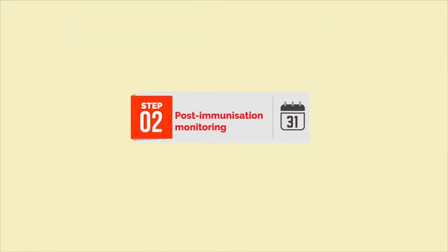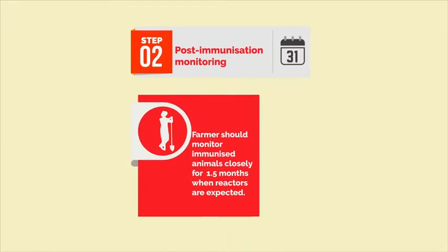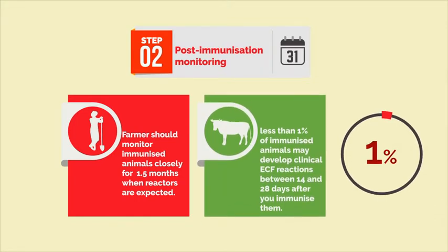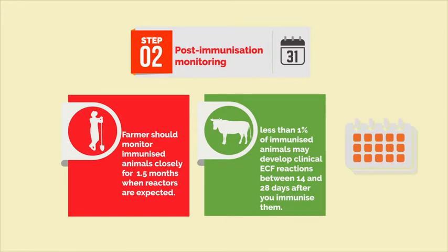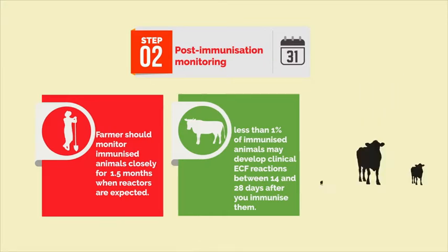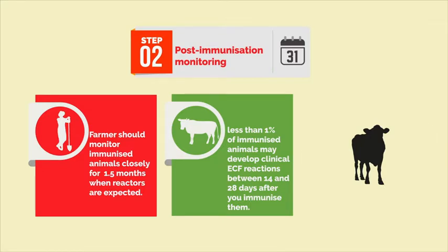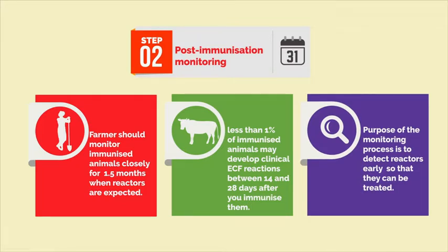Step 2: Post-immunization monitoring. The farmer should be advised to monitor immunized animals closely for one and a half months, when reactors are expected. A small proportion — 1% or less — of immunized animals may develop clinical ECF reactions between 14 and 28 days after immunization. This may be because some animals receive slightly more stabulate than others, or may have less efficient immune systems. There is a risk that these reactors will die of ECF if not treated. The purpose of the monitoring process is to detect reactors as early as possible so that they can be treated. It is therefore important for the farmer to keep you informed of any clinical cases in the immunized animals.